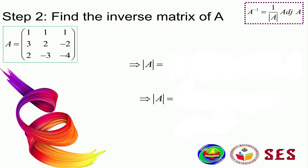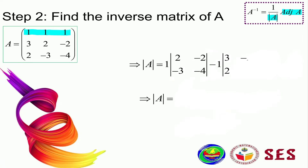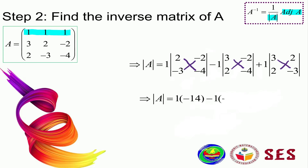Step 2: we need to find the inverse of matrix A. We can find the inverse of matrix A by using the adjoint matrix. Based on the formula we learned before, in order to find the inverse we need to find the determinant and adjoint of A. If we calculate the determinant of A, you will get the determinant of A equal to negative 19.